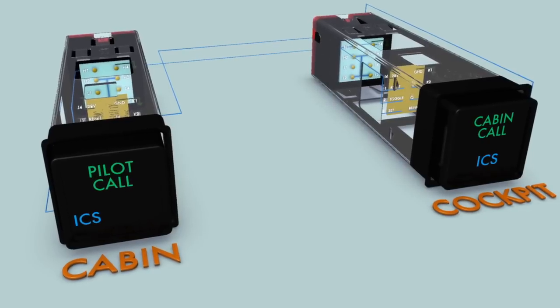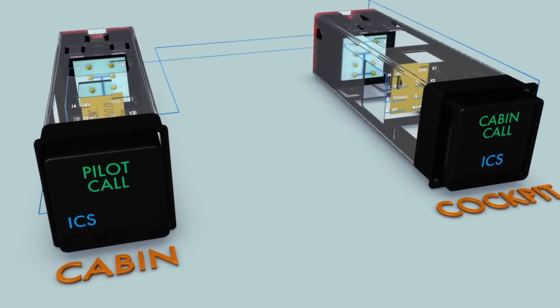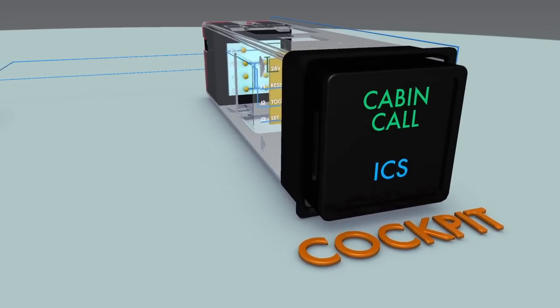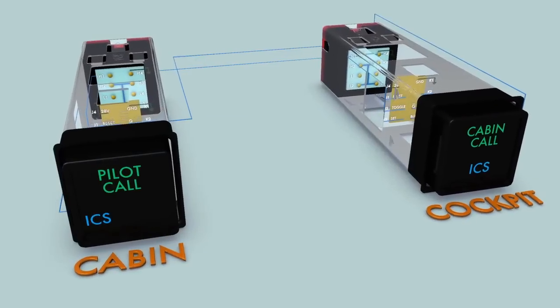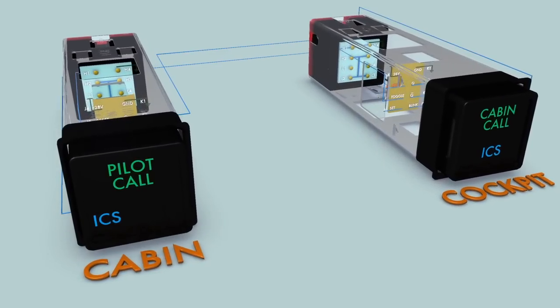Notice the ICS legend and intercom function are controlled exclusively by the cabin call switch in the cockpit, assigning priority to the pilot and preventing any effort by the cabin to cancel the call.